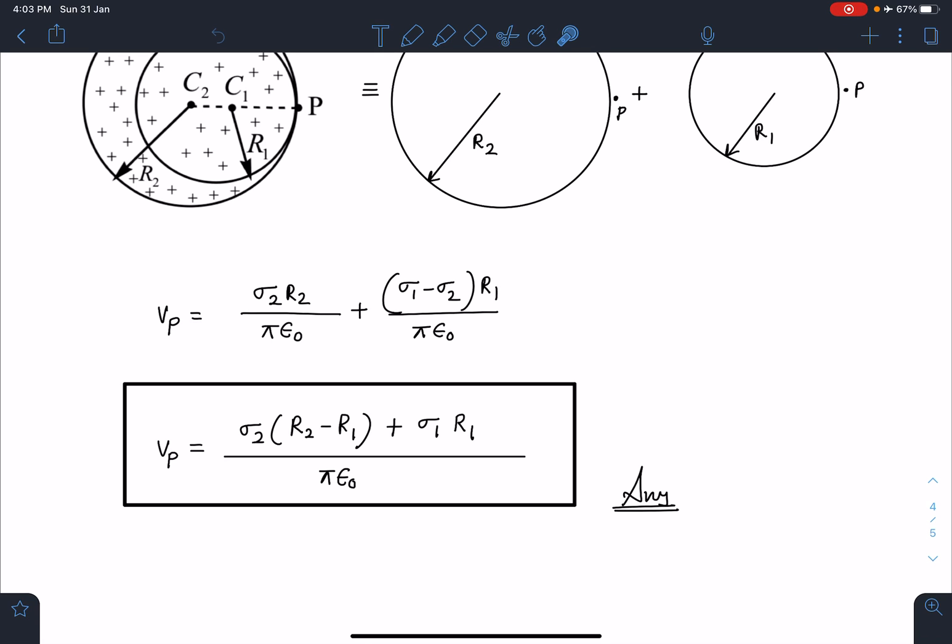When I further simplify, it is going to give me sigma_2*(r2 - r1)/(pi*epsilon_0) + sigma_1*r1/(pi*epsilon_0). This is going to be the final answer for this problem. So it's pretty easy if you remember this result.